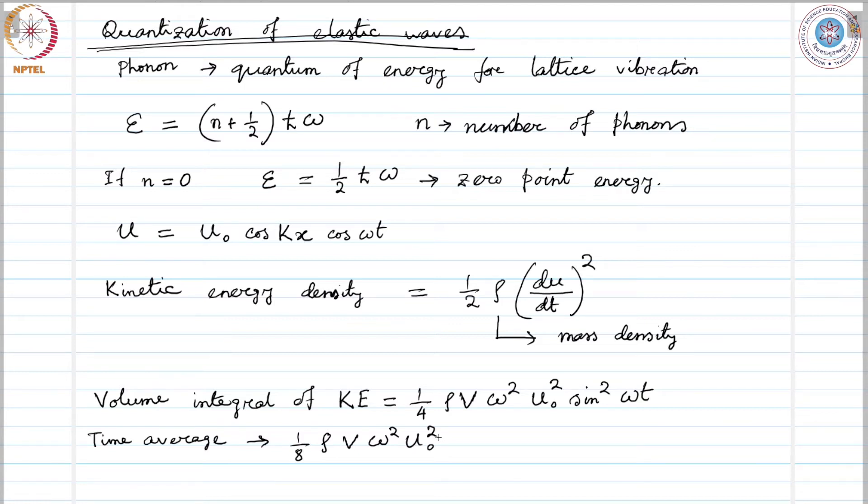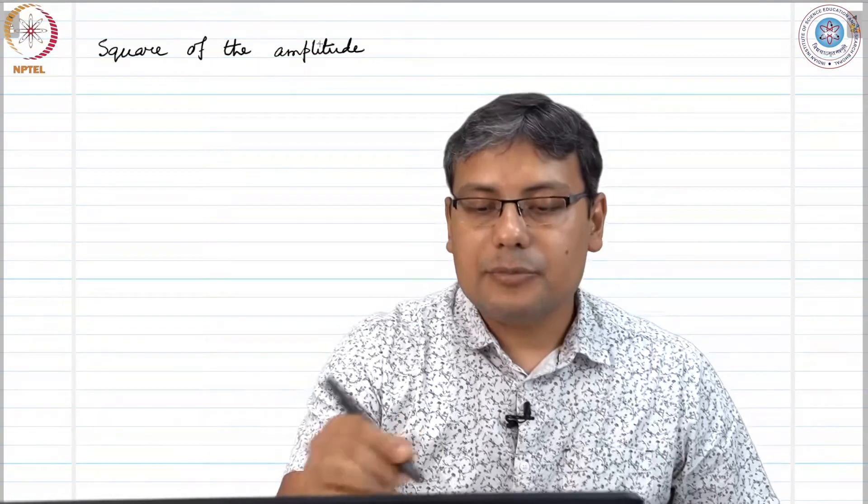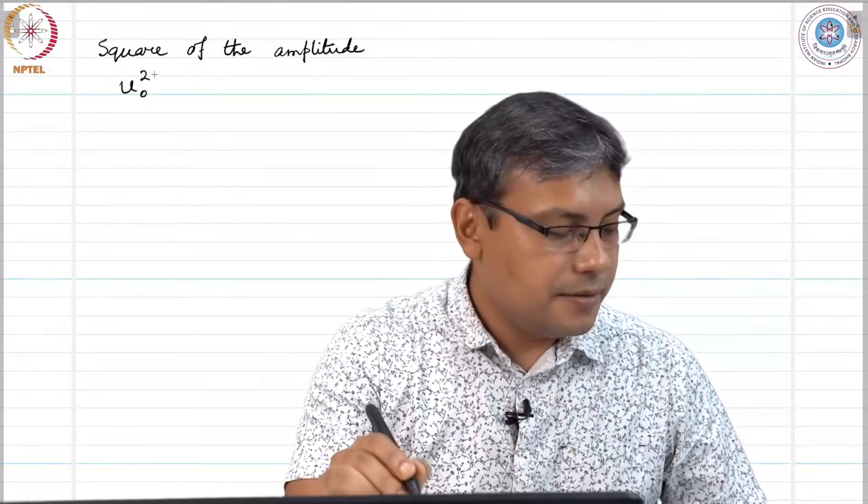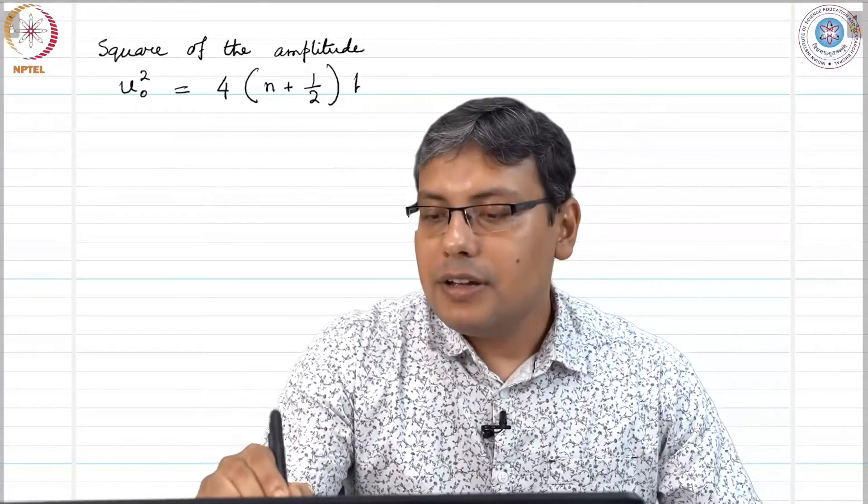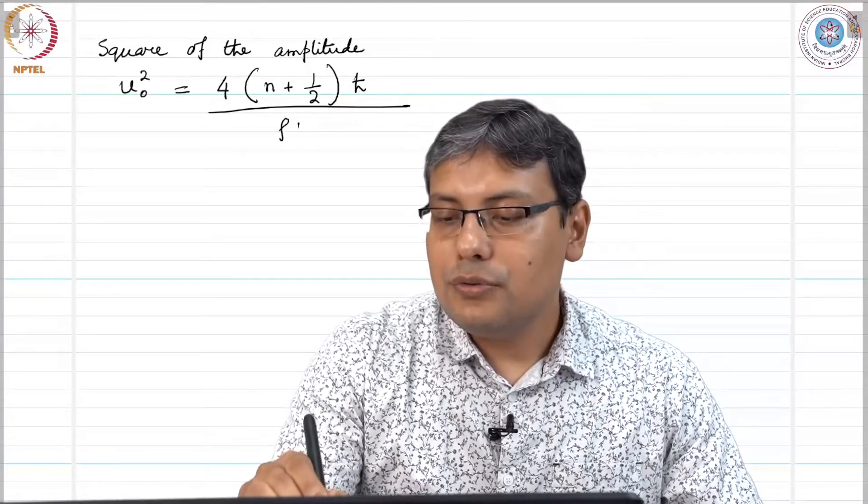How do we get this? Because the time average of sin²(ωt) equals ½, so we get this quantity which is ½(n + ½)ℏω. The square of the amplitude can be written as u₀² = 4(n + ½)ℏ/(ρVω).